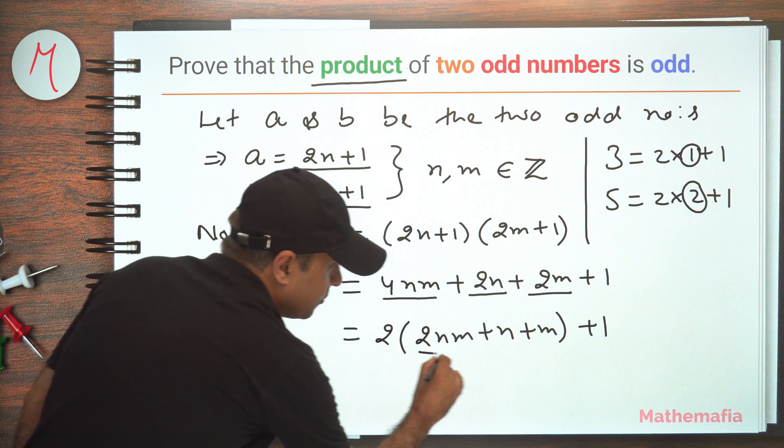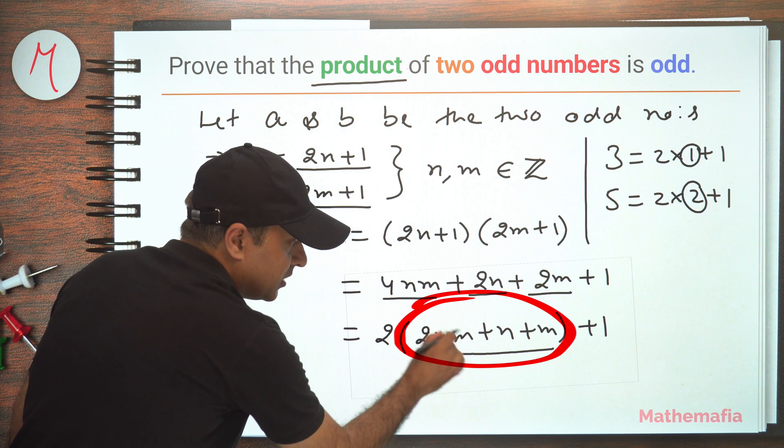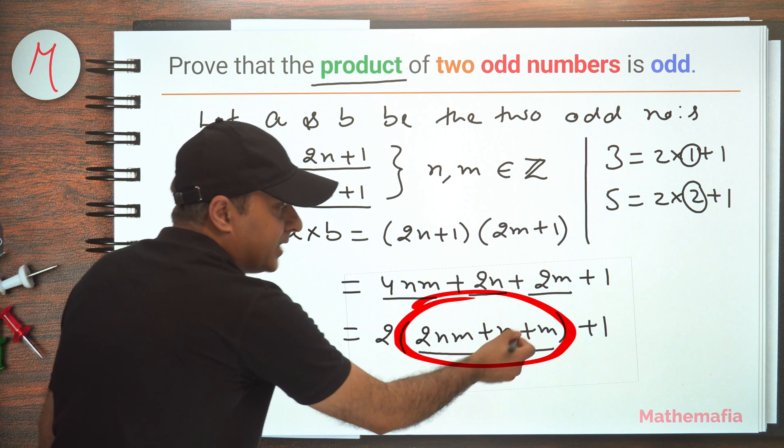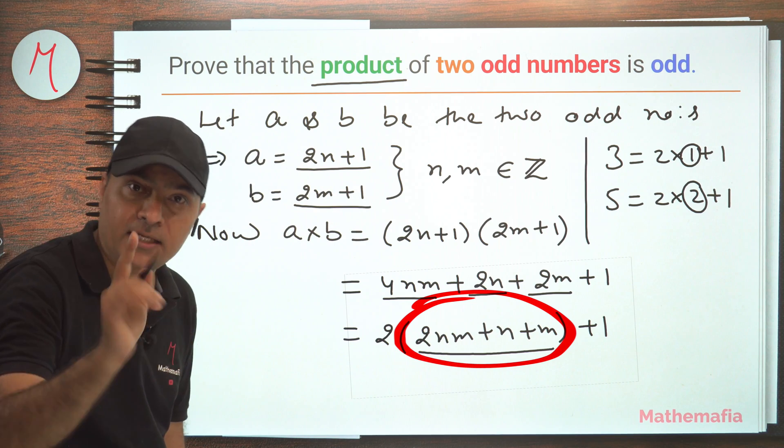Now if you look at this part, 2 is an integer, n is an integer, m is an integer. So this will produce another integer plus an integer plus another integer. So this entire part will give me one integer.